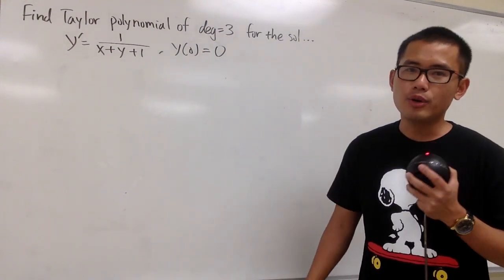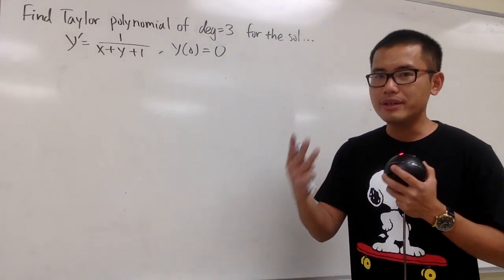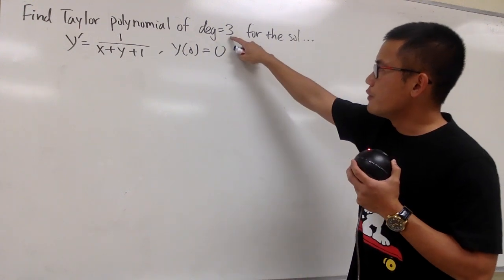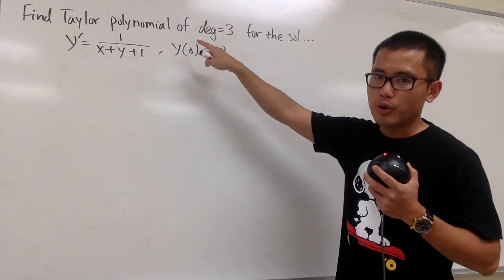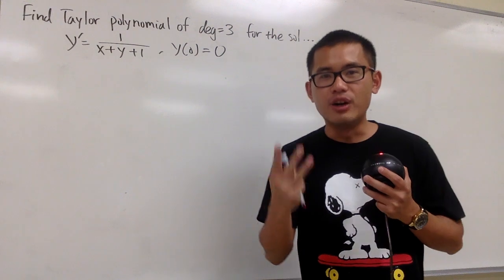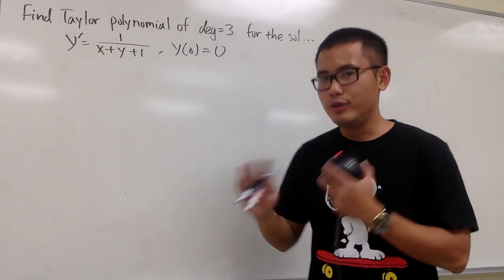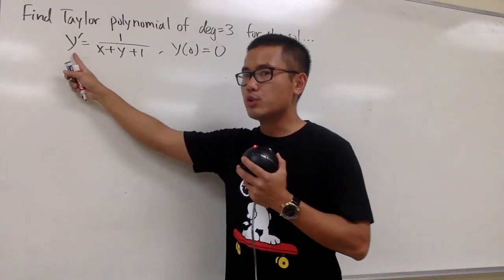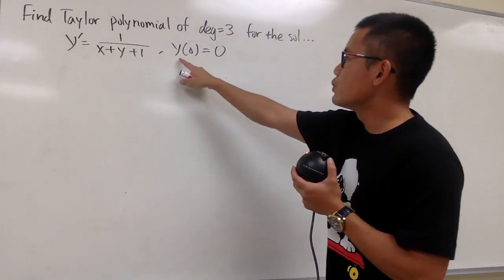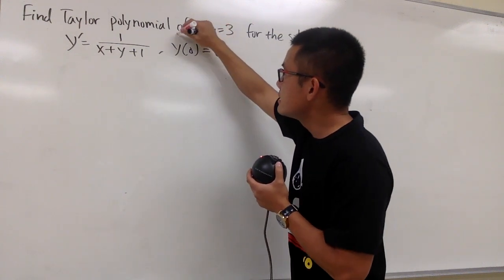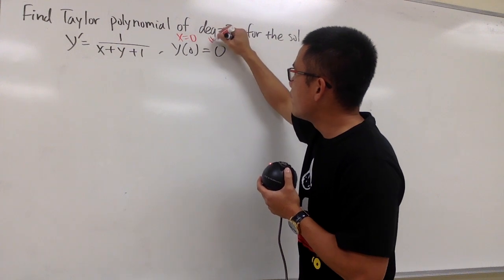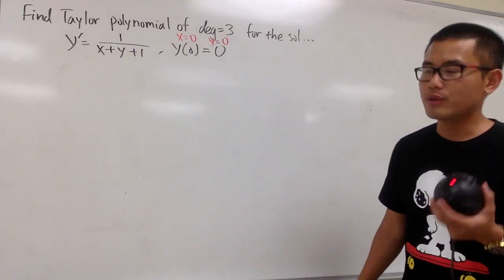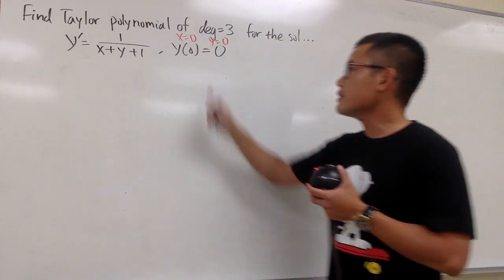We are going to find the Taylor polynomial with degree 3 for the solution to this differential equation. When we are trying to find the third degree Taylor polynomial, we have to get the third derivative — no more, no less. We have the first derivative here already, and y(0) = 0, meaning when x is 0, y will be 0. We will find the Taylor polynomial centered at 0 because x is 0.